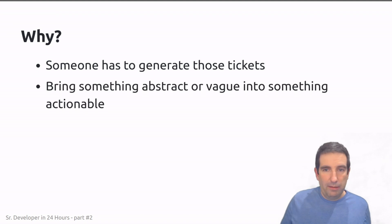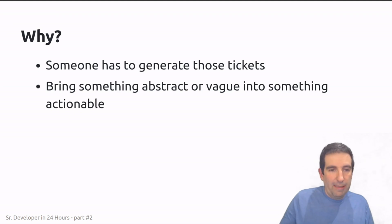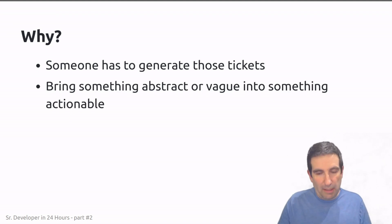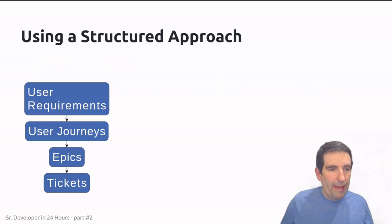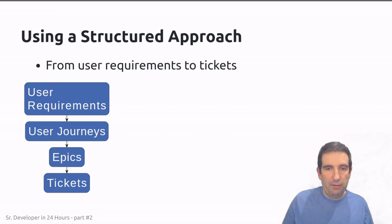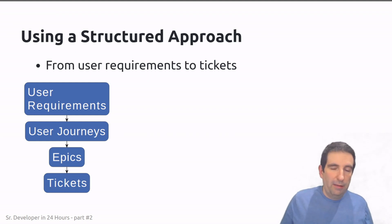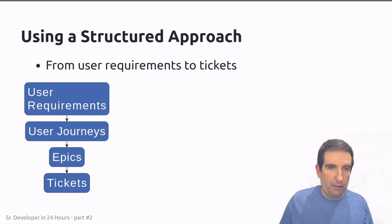What we're basically doing in this process is taking something abstract or vague — user requirements — and turning them into something actionable: a ticket. We're going to use a structured approach going from user requirements to tickets by first starting with the requirements, then creating more cohesive user journeys, creating higher-level epics, and then going into the more detailed tickets we're actually going to work on.